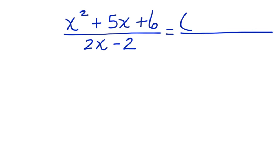We can factor the numerator into two binomials. x squared becomes x and x. And now we need a term that adds together to equal this and multiplies together to equal this.